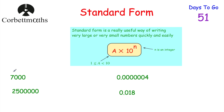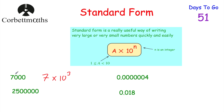Let's start with 7,000. To write 7,000 in standard form, we need a number between 1 and 10, so I'm going to choose 7, then multiply it by 10 to a certain power. 7 × 10 = 70, 7 × 10² = 700, 7 × 10³ = 7,000. So it's 7 × 10³. The reason is: the 7 is in the units column, and to move it 3 columns to the left we multiply by 10 three times — so 7,000 in standard form is 7 × 10³.